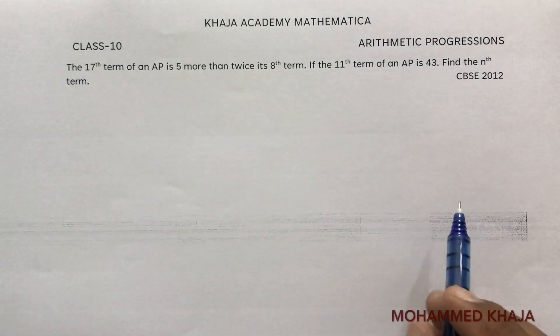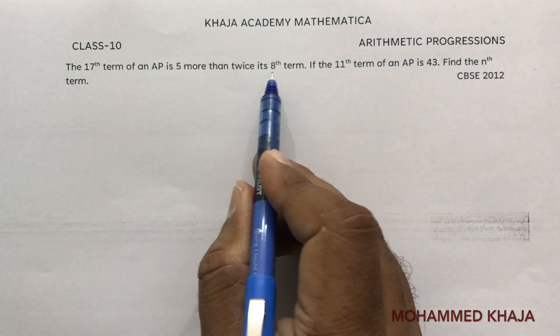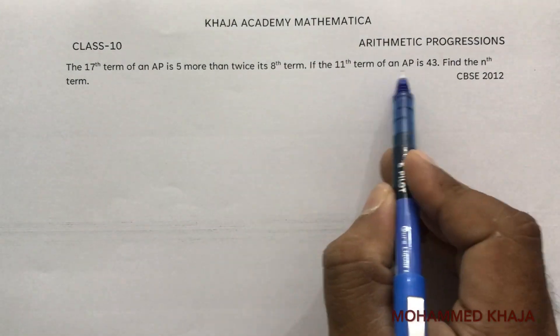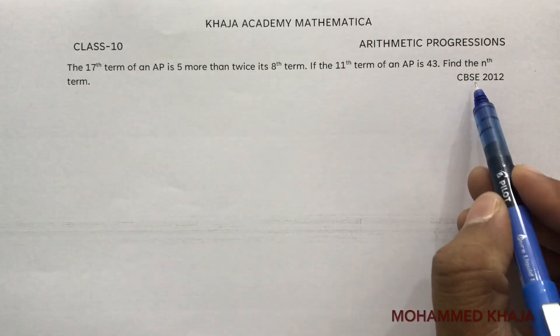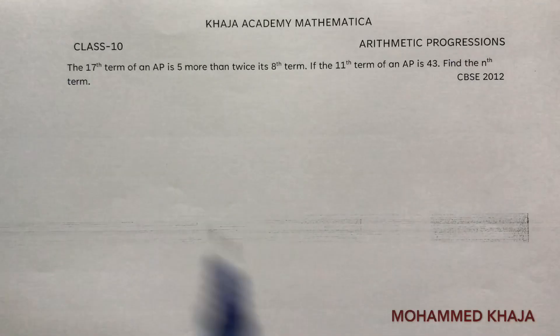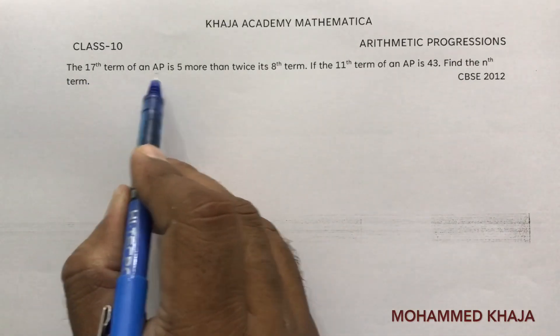The 17th term of an AP is 5 more than twice its 8th term. If the 11th term of an AP is 43, find the nth term. This question is from CBSE 2012. The 17th term of an AP is 5 more than twice its 8th term.